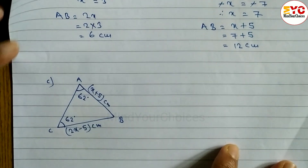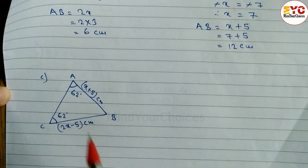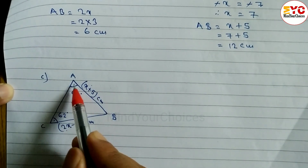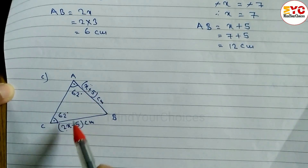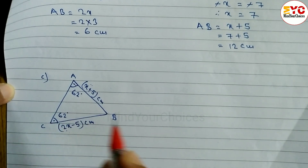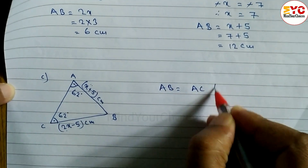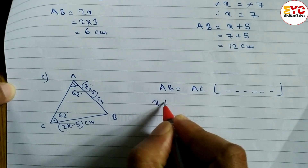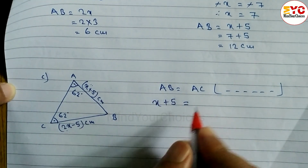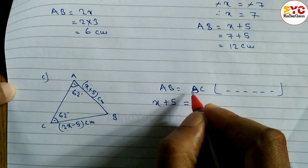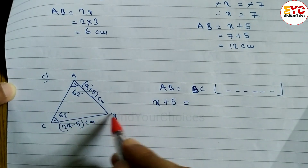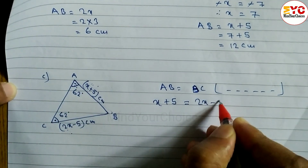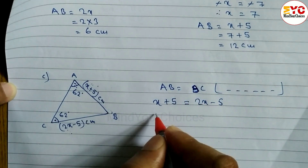Now look at question c. This is also an isosceles triangle because the base angles are equal, and the corresponding sides are definitely equal. In an isosceles triangle, if base angles are equal then sides are equal, and vice versa. So we write AB equals BC — the reason is the same: being an isosceles triangle. Side AB equals x plus 5, and BC equals 2x minus 5.